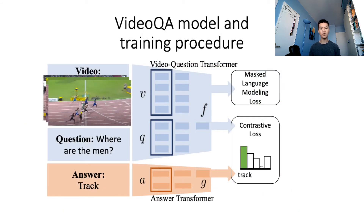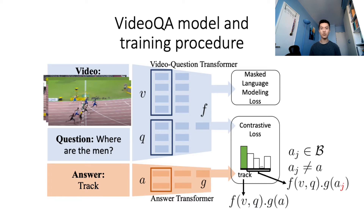We now explain how we make use of our generated dataset to train a video QA model. Given the limited diversity of existing datasets, current methods typically reduce video QA to a classification problem where frequent answers are assigned to unique classes, typically up to 5k unique answers. Such an approach does not scale to the large-scale vocabulary of 60 million different answers in HowToVQA69M. Therefore, we propose a training procedure based on the contrastive loss between a video question transformer and an answer transformer. For each positive video clip question-answer triplet VQA, we construct a negative triplet by considering other answers within the training batch.